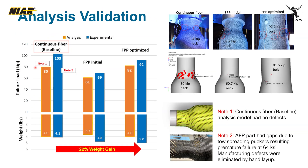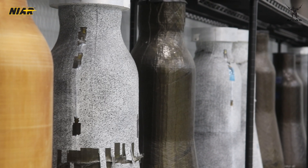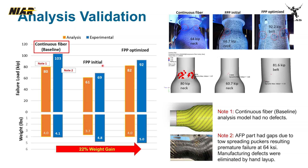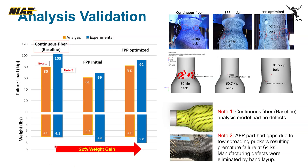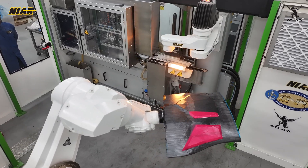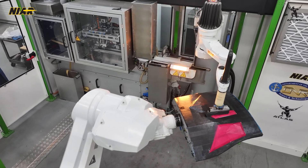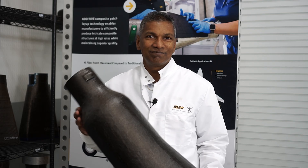Based on first-ply failure criteria, the predicted compressive strength of the continuous fiber design assuming no manufacturing defects was 80 KSI. We used this prediction as the baseline, although the hand-layup part actually failed at 103 KSI during testing. The continuous fiber part produced with AFP, however, failed prematurely at 64 KSI due to defects in the cylinder's neck region. Through multiple design iterations, the predicted strength of the FPP part increased from 61 KSI to 82 KSI, bringing its theoretical strength close to that of the continuous fiber design with a 22% increase in weight. This progress lays the foundation for optimized FPP design that supports high-rate manufacturing and expands the possibilities of automated composite fabrication.